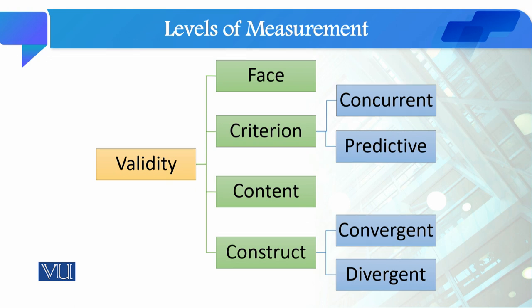validity کی first type جس کو ہم face validity کہتے ہیں، پھر اس کی second type ہے جس کو ہم criterion validity کہتے ہیں اور اس کی آگے دو sub types ہیں: concurrent and predictive validity۔ پھر third type content validity ہے اور fourth type جس کو ہم construct validity کہتے ہیں، جس کی آگے دو sub types ہیں: convergent and divergent validity۔